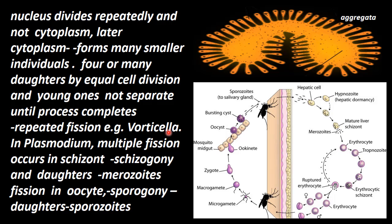For example, in Plasmodium — that is, the malaria-causing parasite, Plasmodium vivax — multiple fission occurs in the schizont. The Plasmodium vivax schizont goes to the liver cells, where it matures and gives out many small daughter cells. These daughter cells are called merozoites.